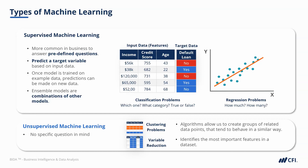Variable reduction might be used in combination with another machine learning model that has a high number of inputs. Unsupervised models aren't so much about giving us answers as pointing us in the right direction, with grouping our data or identifying priorities.